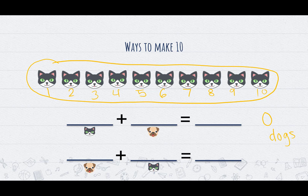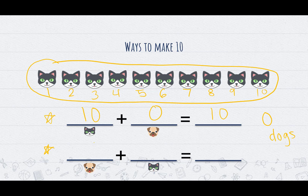Now we're going to practice writing our addition sentences. Starting with our number of cats: 10 cats plus 0 dogs, but all together in our picture we still have 10. So 10 plus 0 equals 10. Now let's try the other way — 0 dogs plus 10 cats equals 10. So 0 plus 10 equals 10. This is our first way that we can make 10.